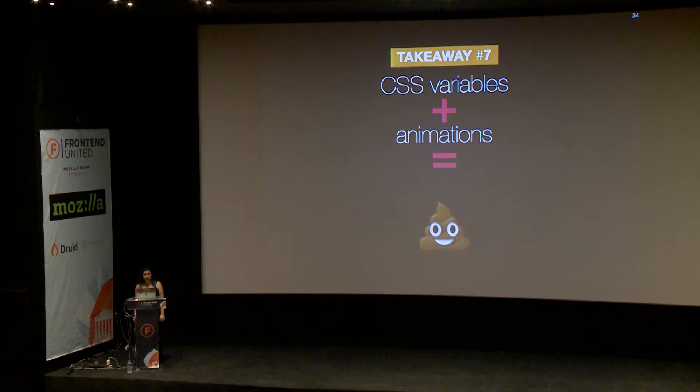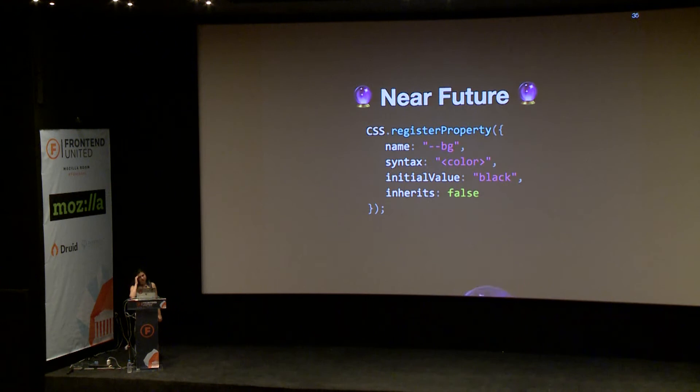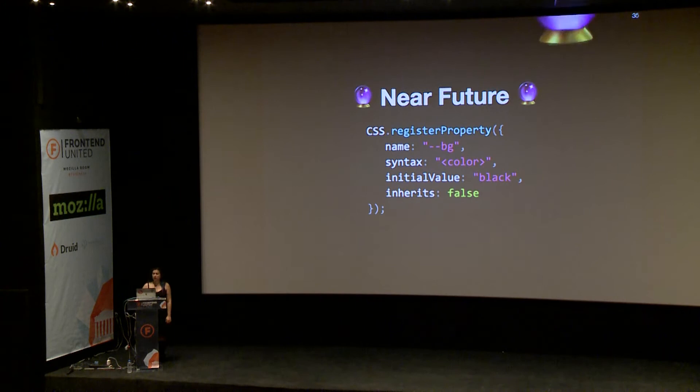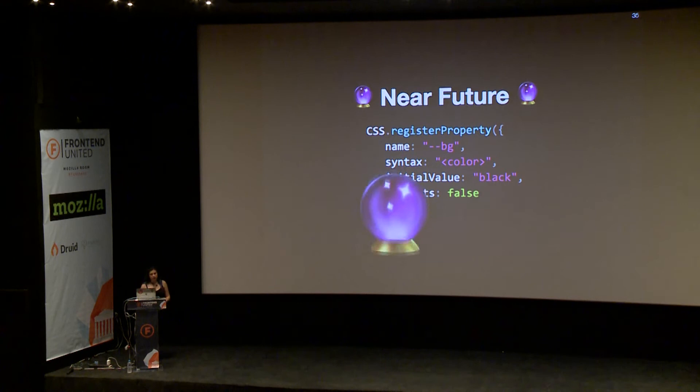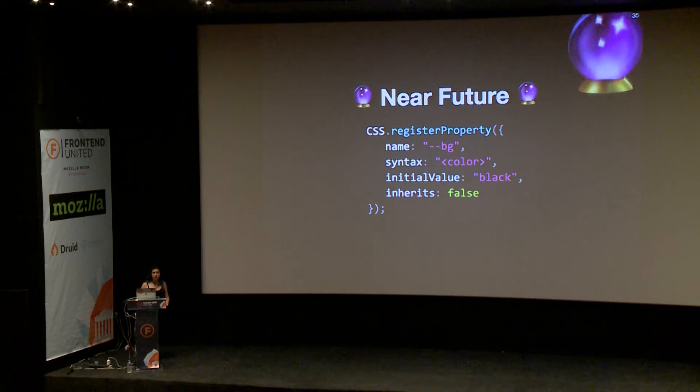So the seventh takeaway is that CSS variables plus animations equals chocolate ice cream. But there is hope. In the near future, we'll be able to use JavaScript — sadly not CSS, this should really be a CSS thing — but at least that's better than nothing. We'll be able to use JavaScript to define metadata for our custom properties: what is their syntax, what is their initial value if not set, and whether they actually inherit so we don't have to do the trick to disable inheritance.